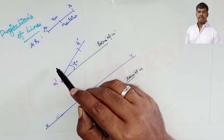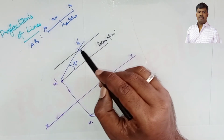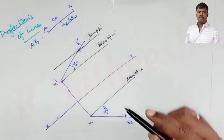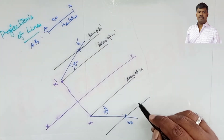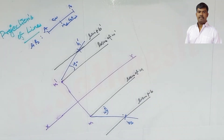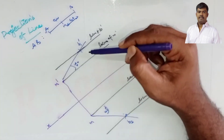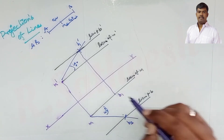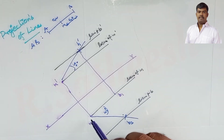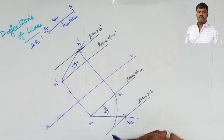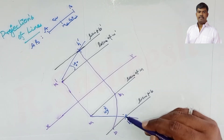Draw the locus of b-dash and the locus of b. Then draw a vertical line from b1-dash down to the locus of b. Using m as center and m-to-b1 as radius, draw an arc. Where this arc intersects the locus of b gives end point b (top view).